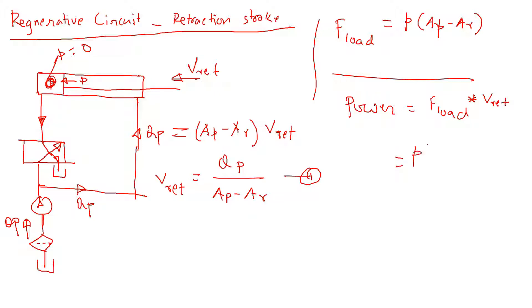So the load we calculated is P times (Ap - Ar), times the velocity which is Qp divided by (Ap - Ar). Now if you look at it, P times Qp is the power, which is the power of the pump.